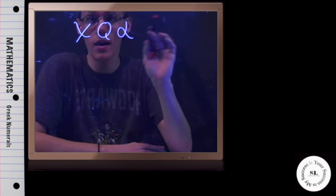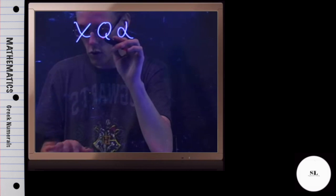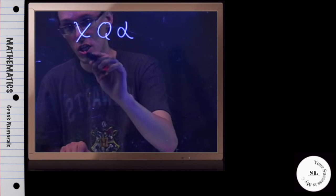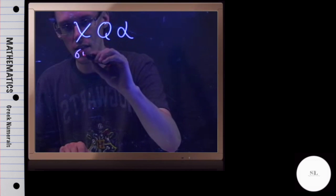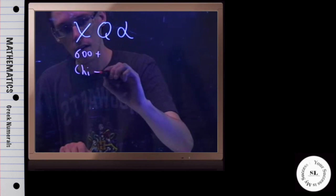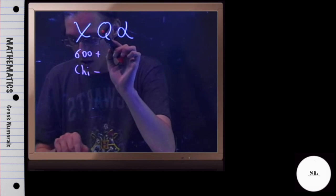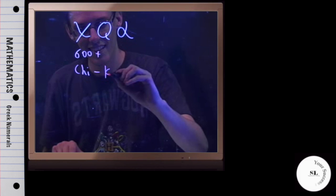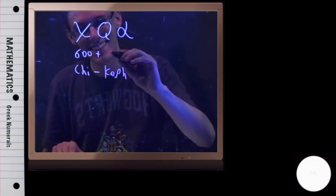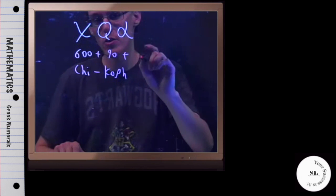You just add these symbols together and you're done. So, first of all, what is this? If you have the chart here with the Greek numbers, which is what I'm using, we have that this is chi and its value is 600. So I've got 600 — that's chi — plus, so this kind of looks like a q but it's not. It is koph, k-o-p-h, and its value is 90, plus, well this one's alpha, and that is 1.